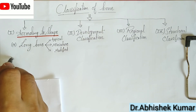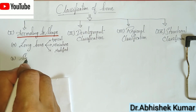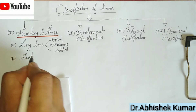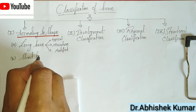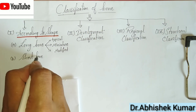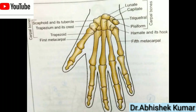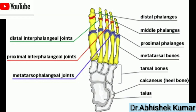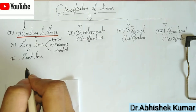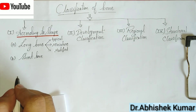Now come to the short bone. Short bones are usually shaped like a cuboid. Examples include cuneiform, trapezoid, and scaphoid shapes. The main examples are tarsal and carpal bones.